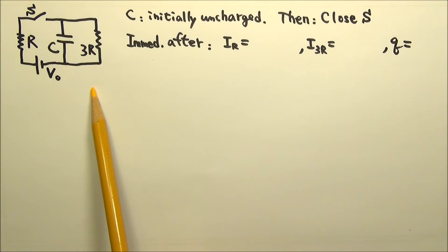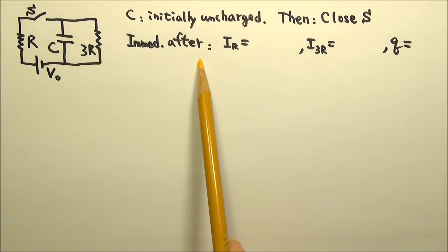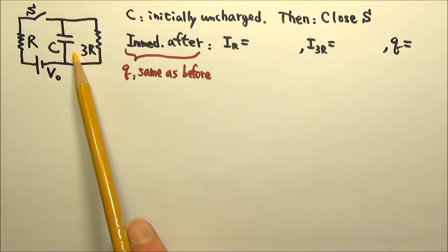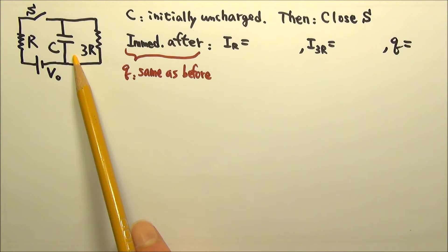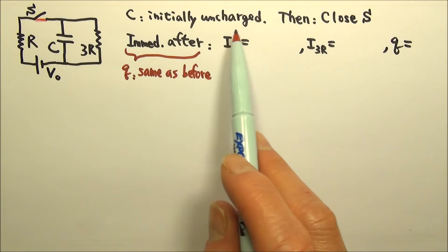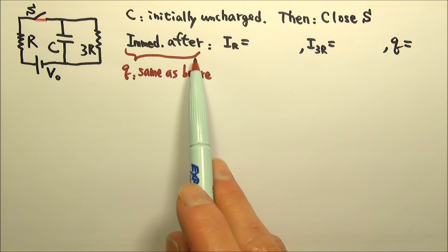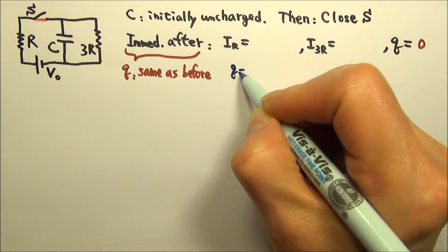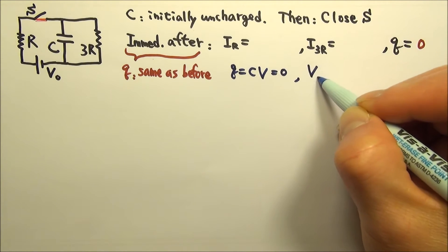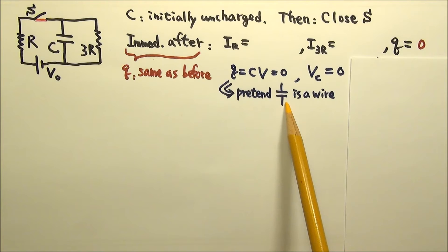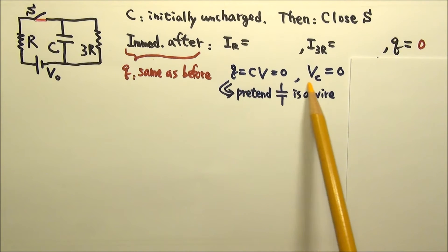When we close the switch, we make a change to the circuit. Immediately after we make a change, the charge on the capacitor is the same as before, because it takes time to charge or discharge a capacitor — it takes time for charges to move onto the plates or off the plates. Since the capacitor is initially uncharged, immediately after the switch is closed, the charge on the capacitor is still zero. And since Q = CV, Q being zero means the voltage across the capacitor is also zero. This means we can pretend that the capacitor is like an ideal wire just at this particular moment.